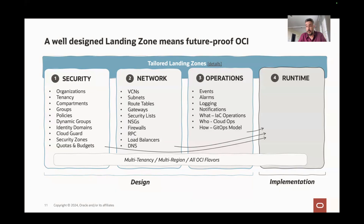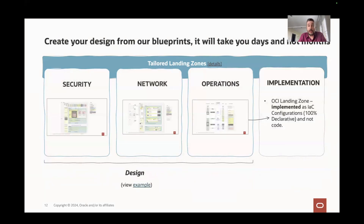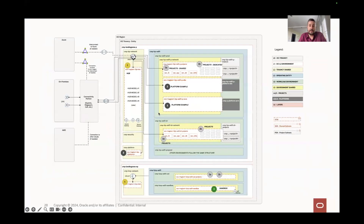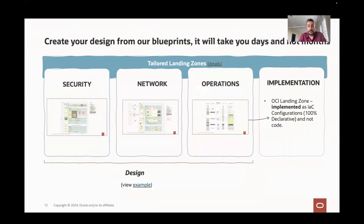Your cloud ops team will be mapped to identity and access management. With all of this, your implementation — if you use the configurable approach — will be drastically small. This is how you reduce your efforts. We recommend you to create your design from our blueprints; it will take you days. You don't start with a wide, empty canvas. Start with existing blueprints full of best practices, with compartment structure, shared elements, dedicated elements, and network elements — you have everything to tailor your landing zone.